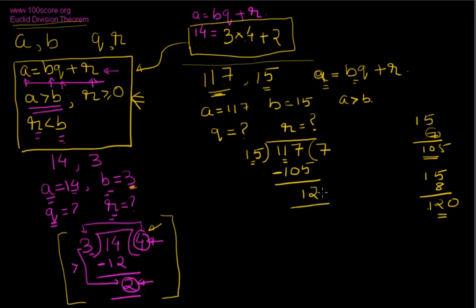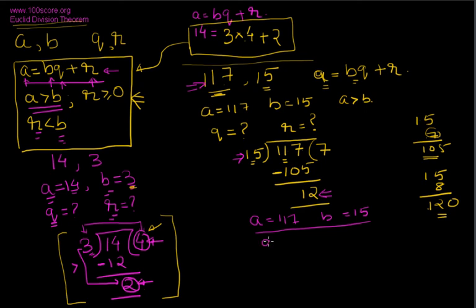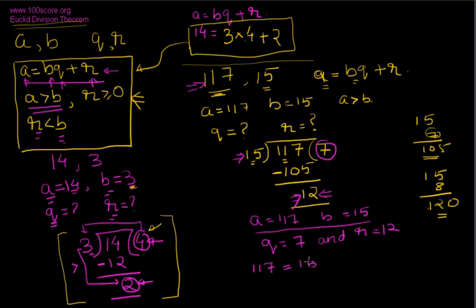Since 12 is less than 15, we stop the division. Now putting all the numbers into the equation: A is 117, B is 15, Q is 7, and R is 12. So the equation becomes 117 equals 15 times 7 plus 12, which represents the Euclidean division theorem.